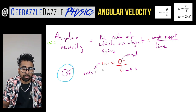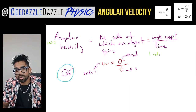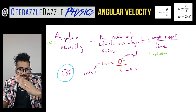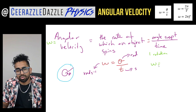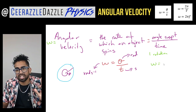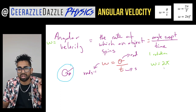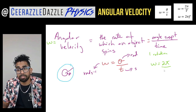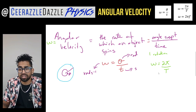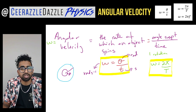We can now get another formula for omega. Let's think about one complete rotation. The angle swept for one rotation is 2π radians. And for one rotation, the time taken is also known as the time period, capital T. So we have another formula: omega equals 2π divided by the time period T.